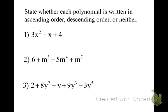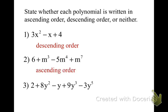Now check your work. Since it goes from the 2nd to the 1st to the 0 power, it would be in descending order. The next one starts with the constant term, which is really 0 power, then the 3rd power, 4th power, 7th power — so it's in ascending order. The last one goes from the 0 power to the 2nd power to the 1st power to the 3rd power to the 5th power, so that is neither.